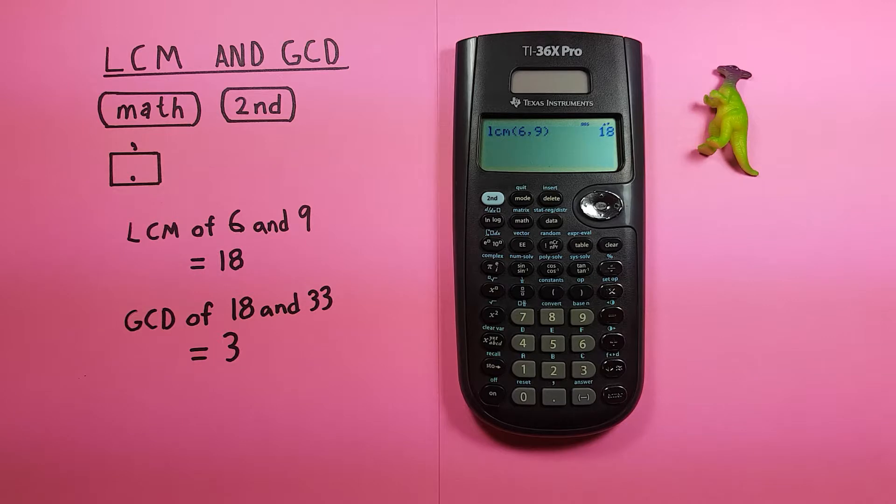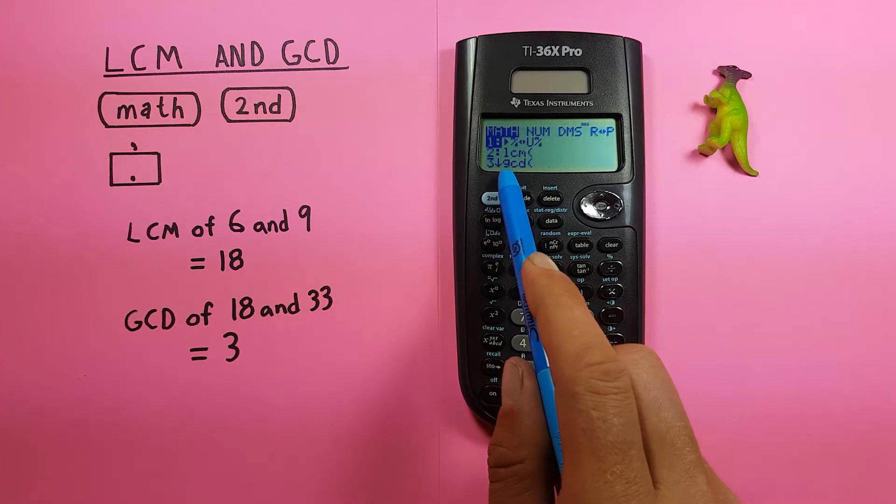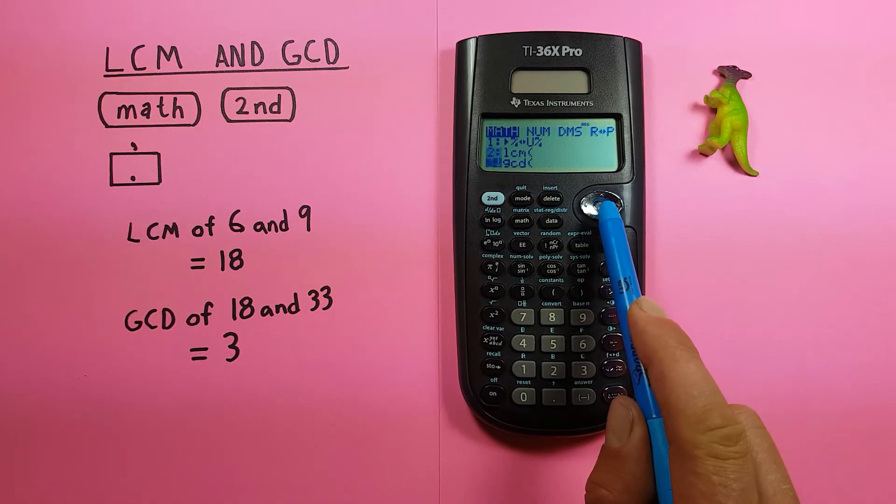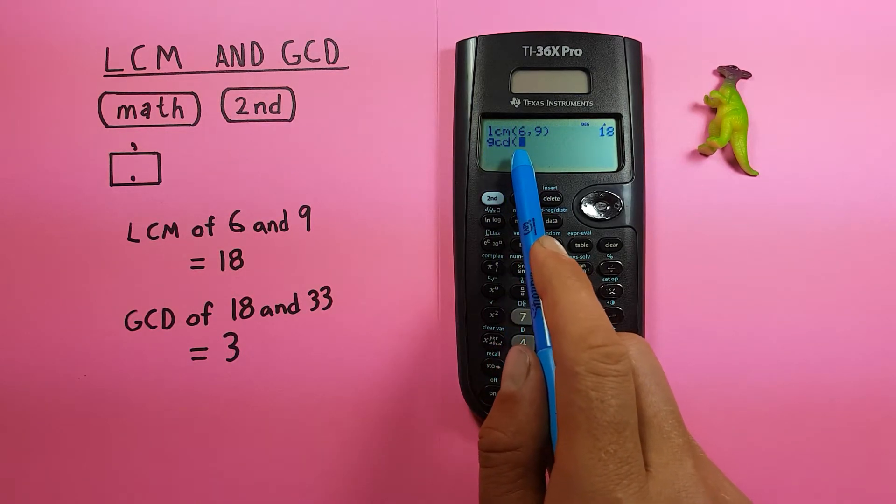What about GCD or greatest common divisor? If we go into the math menu number three is GCD. Again you can either hit three or scroll down and hit enter so that you have GCD and the bracket on your screen.